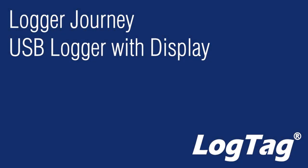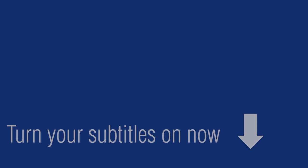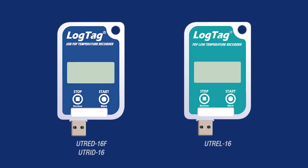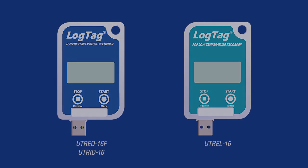When using one of LogTag's USB loggers with display, users are able to gain information about their logging status by viewing the LCD display on the logger. During logging, the display will provide the user with information such as the current temperature and any alarm excursions.